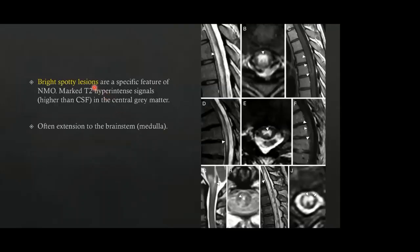Bright spotty lesions are a specific feature of NMO when observed. These are markedly hyperintense T2 signals higher than adjacent CSF, located in the center of the gray matter. On these images, the characteristic H-shaped appearance of the gray matter is diffusely hyperintense on T2, giving rise to the bright spotty lesions. There is diffuse involvement of more than two-thirds of the transverse diameter of the cord, and lesions often span to involve the medullary junction and brainstem.